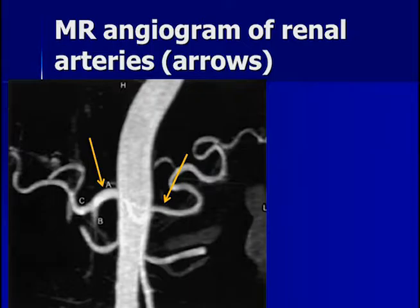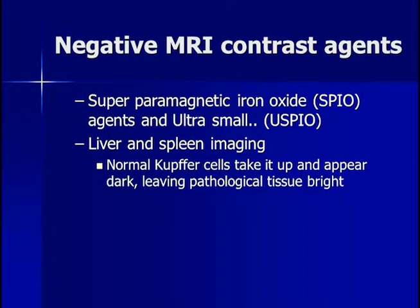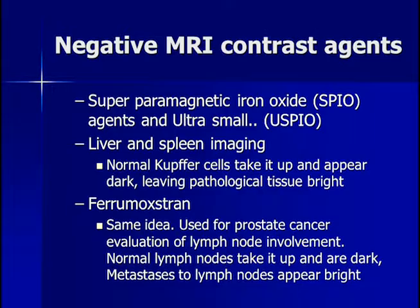This is an example of an MR angiogram showing the aorta, with yellow arrows indicating the renal arteries arising from it. There is very nice contrast resolution between the surrounding fat and the contrast enhancement. Negative MRI contrast agents include superparamagnetic iron oxide (SPIO) particles, which are very small. Ultra-small superparamagnetic iron oxide (USPIO) particles are even smaller and can be used for liver and spleen imaging, because Kupffer cells normally take up iron particles and normal tissues appear dark, while lesions appear bright. Ferumoxytran is another SPIO agent used for prostate cancer evaluation and lymph node involvement — normal lymph nodes take it up and become dark, whereas metastases look bright in comparison.